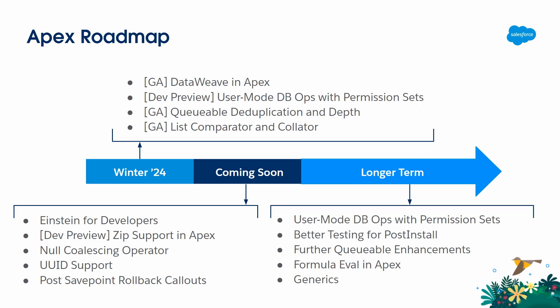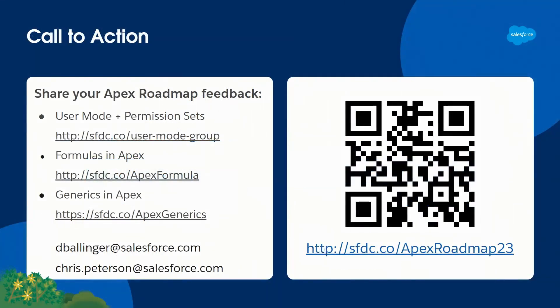Looking further forward at the complete roadmap: user mode with permission sets will be shaped by your feedback. We're working on post-install script testing directly in Apex. Further queueable enhancements are primarily the cursor work. Formula evaluation in Apex as Chris mentioned. And yes, generics is still on the roadmap - we're still looking for feedback on the scenarios you want to work through, and you may have noticed we need generics ourselves now for the formula API we just showed. Scan the QR code to access the forum links and all the resources. If you'd like to provide feedback on how we should shape any of these features, it's always valuable to us.